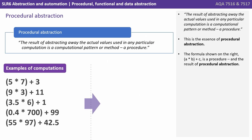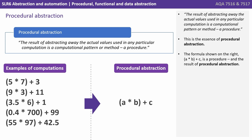So let's start with procedural abstraction. The result of abstracting away the actual values used in any particular computation is a computational pattern or method — a procedure — and this is the essence of procedural abstraction. The formula shown on the right, A times B plus C, is a procedure and the result of procedural abstraction.